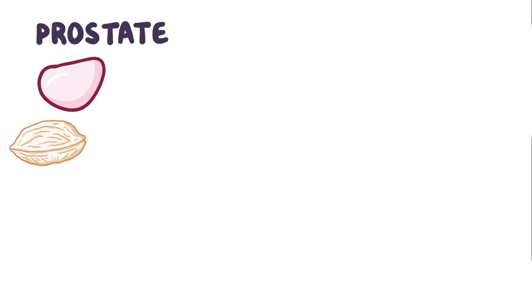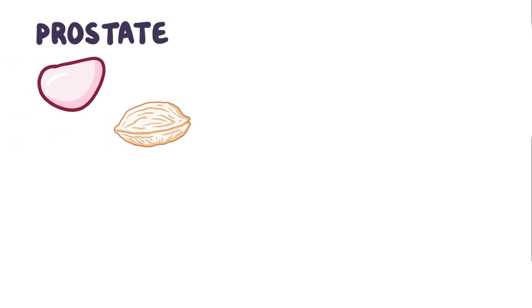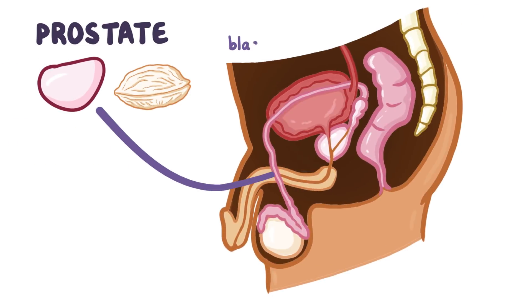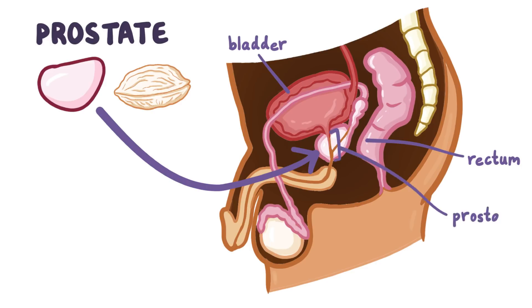The prostate is a small gland, about the size and shape of a walnut, that sits under the bladder and in front of the rectum. The urethra, which is the tube through which urine leaves the bladder, goes through the prostate before reaching the penis. And that part of the urethra is called the prostatic urethra.